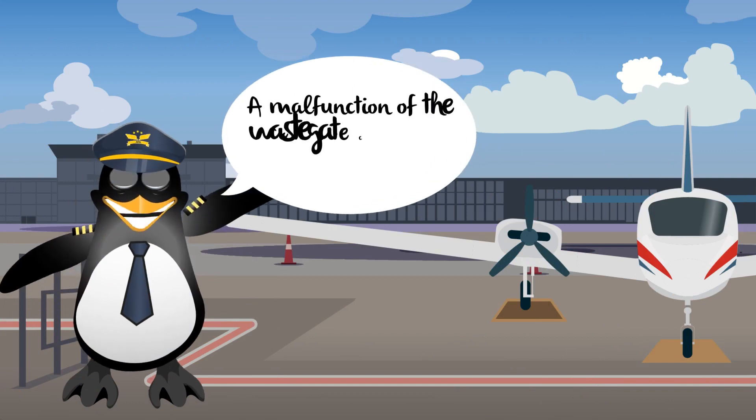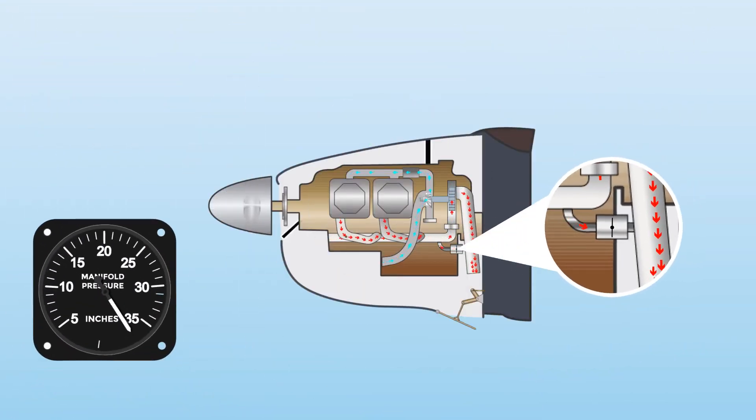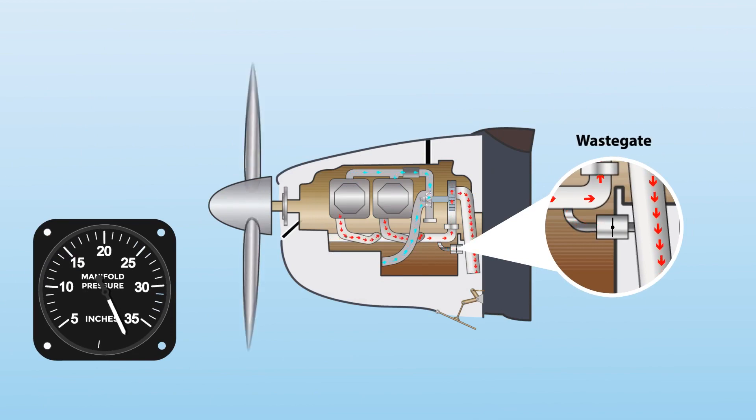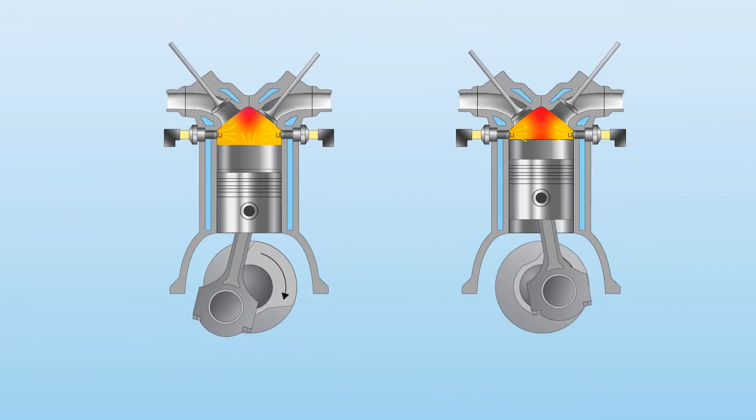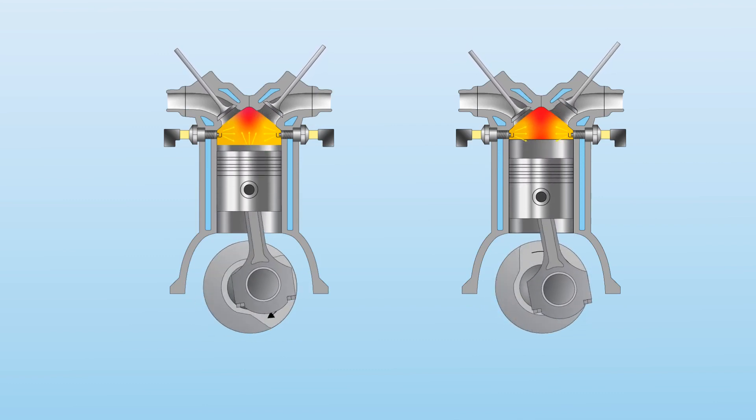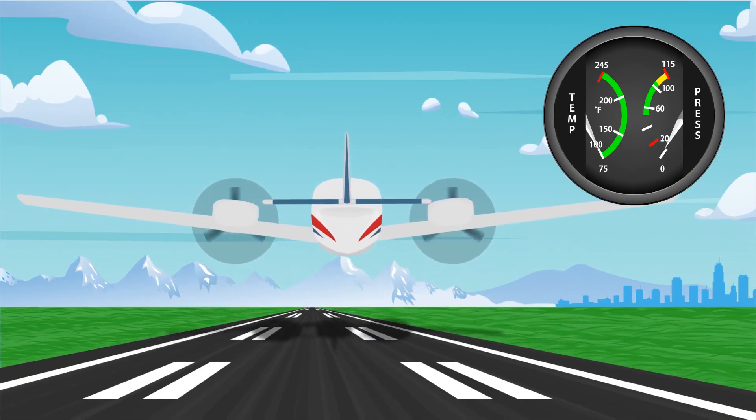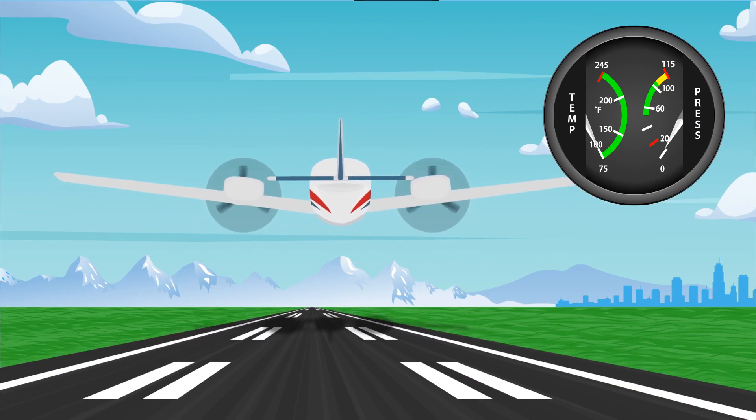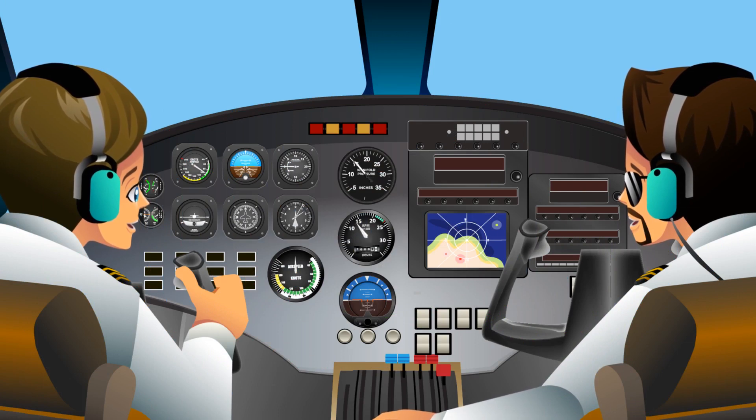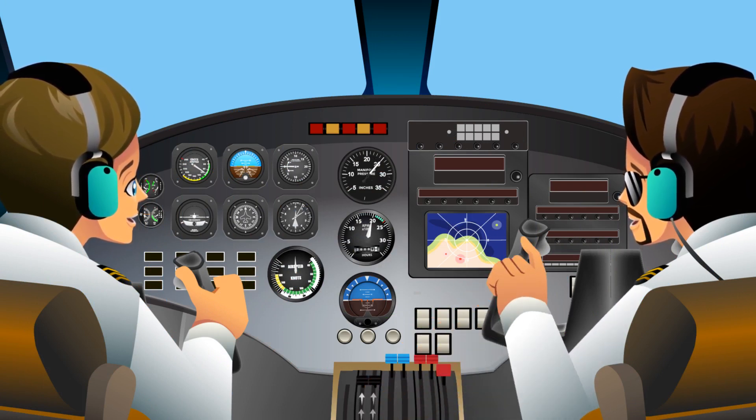A malfunction of the wastegate can cause overboost or underboost. Overboost is when the wastegate remains closed and produces a pressure that exceeds the engine's limitations. Overboost may produce severe detonation due to the leaning effect of increased air density. If take-off power is applied while the engine oil temperature is below its normal operating range, the cold oil may not flow out of the wastegate actuator quickly enough to prevent an overboost. The pilot should advance the throttle cautiously to prevent exceeding the maximum manifold limits.